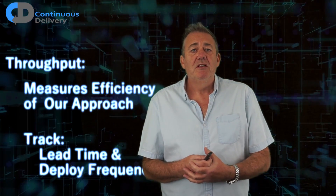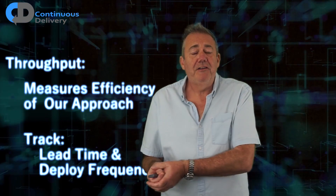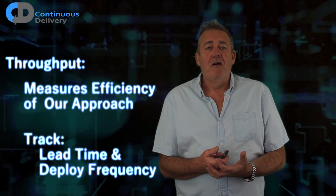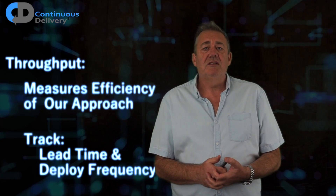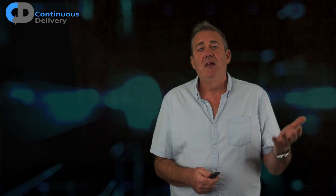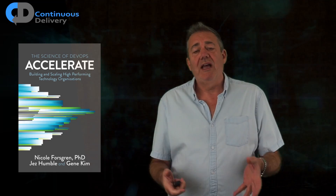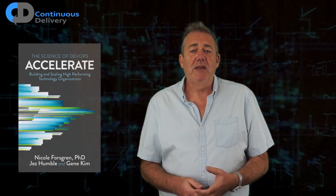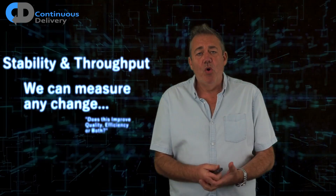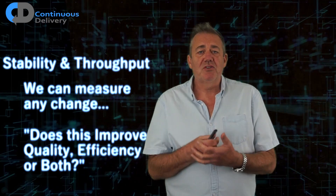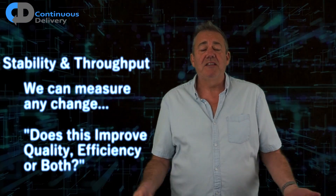If we can produce software with high quality at high throughput, we are doing well. These ideas are based on the work of DORA, the DevOps Research Association, formed originally by Nicole Fosgren, Gene Kim and Jez Humble, and captured in the wonderful book Accelerate: The Science of Lean Software and DevOps — I recommend it to you. Stability and throughput are important because they allow us to measure these imponderables and get a much better handle on the effectiveness of our team.